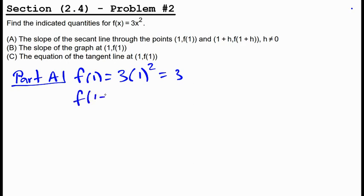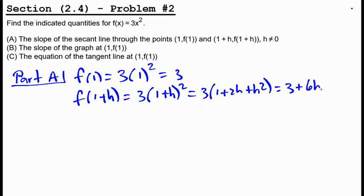And f(1 plus h) would be 3 times (1 plus h) squared, which when we FOIL gives us 1 plus 2h plus h squared. And then when we distribute the 3, it gives us 3 plus 6h plus 3h squared.